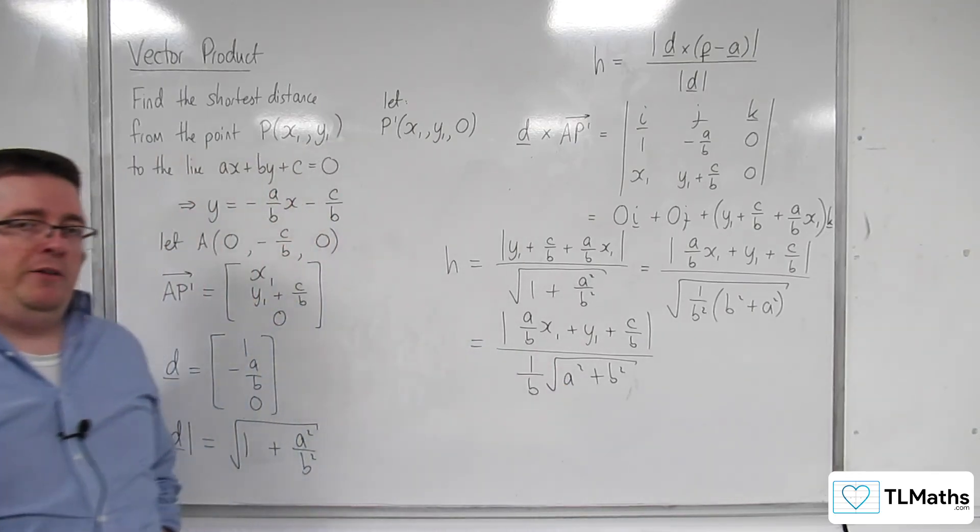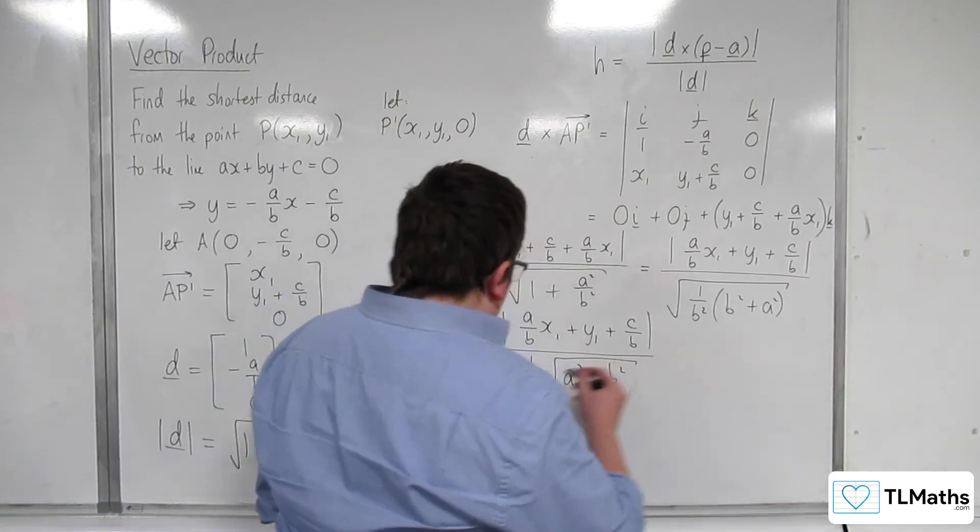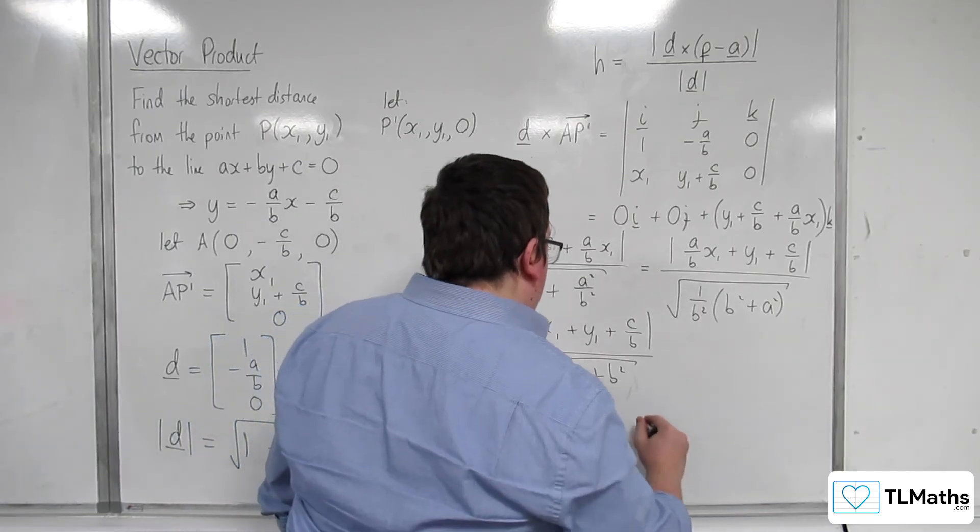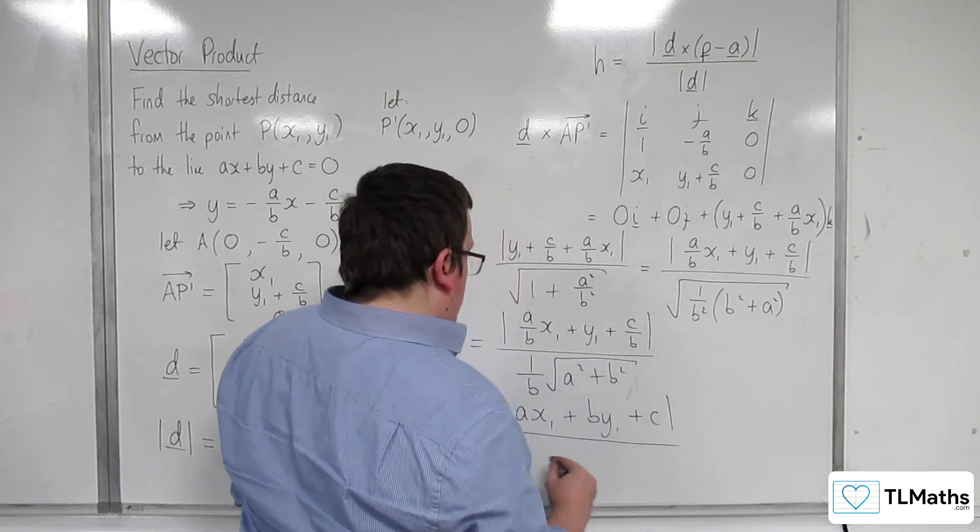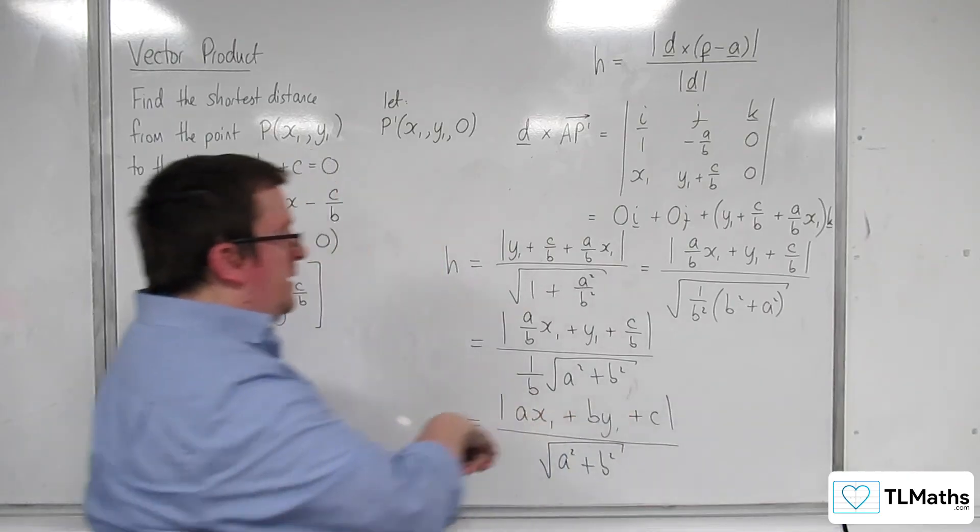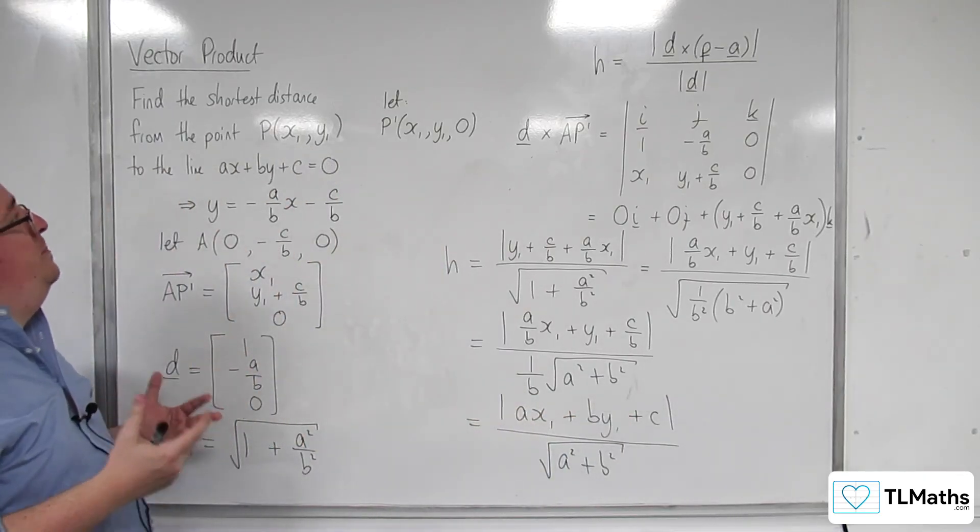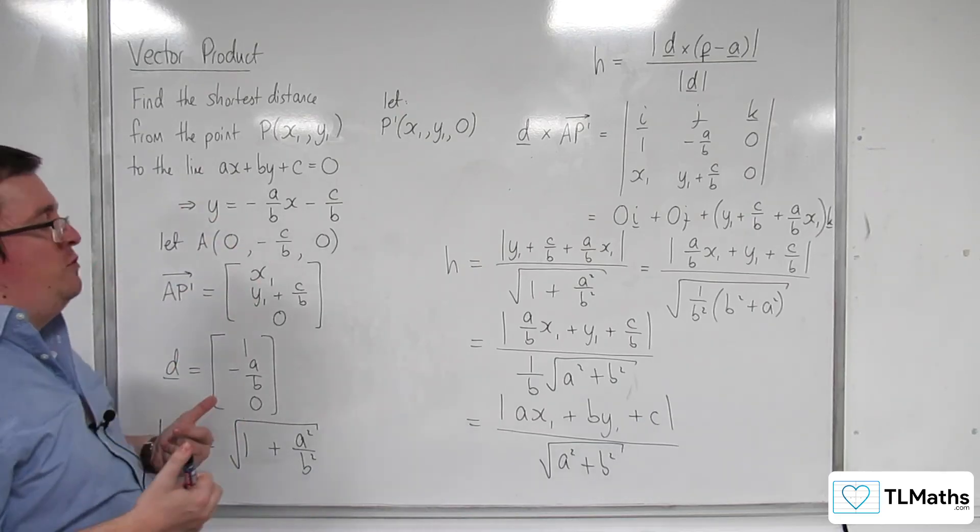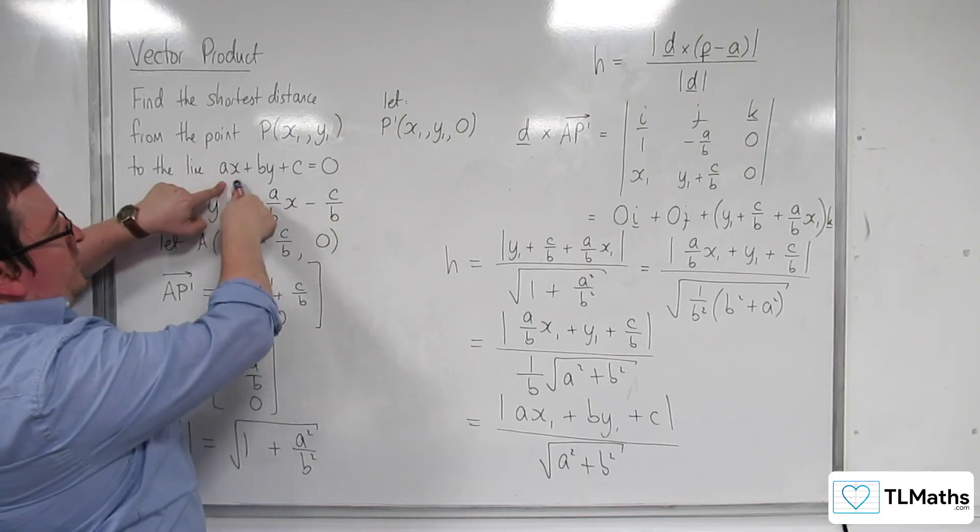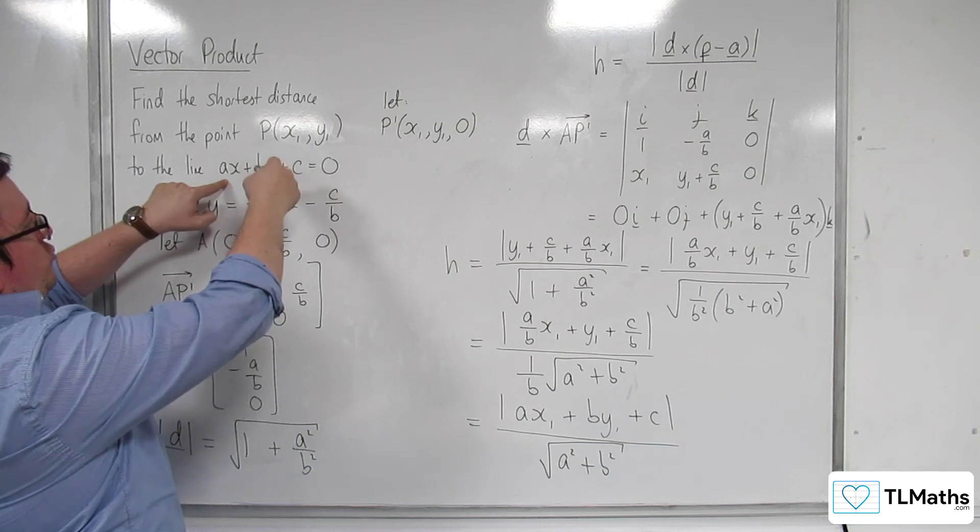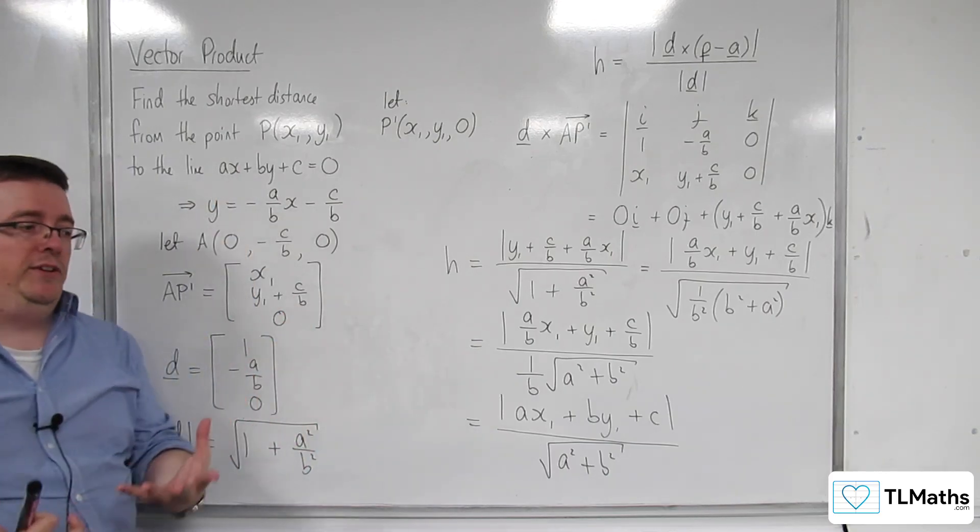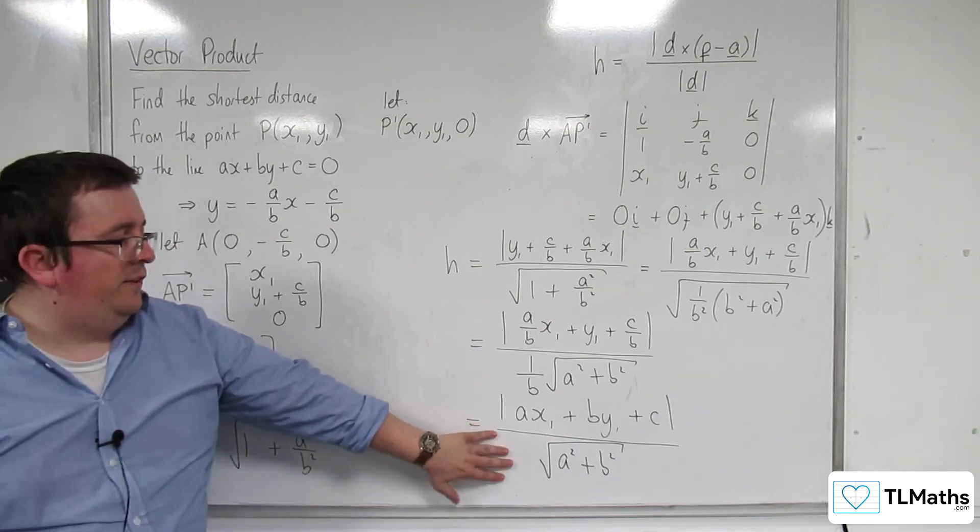And now that I've got this 1 over b here, I can multiply top and bottom by b. And the consequence is that I'm going to get ax1 in the numerator plus by1 plus c over this length of a squared plus b squared, the square root of a squared plus b squared. And this is the formula for finding the shortest distance from the point P with x1, y1 to the line ax plus by plus c equals 0. So, the shortest distance in two dimensions. Now, what's nice about that is that you've got the line in this form, ax plus by plus c. So, substituting x1 and y1 straight into this. The magnitude of that divided by the square root of a squared plus b squared. And that is that shortest distance. So, we can bring it down to this nice formula here.